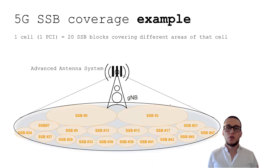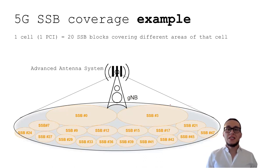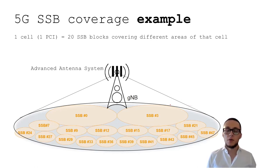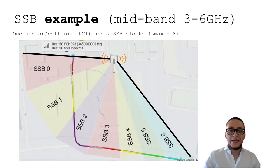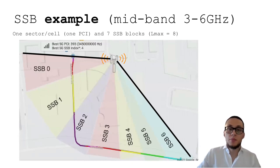From a conceptual point of view, let's understand what SSB beams and SSB coverage mean. Here you can see a gNodeB 5G base station with an advanced antenna system showing just one sector. That sector consists of 20 SSB blocks in this example, and you can see how different SSB blocks serve different areas. Here is another example from a real network for mid-band, where up to eight different SSB blocks are possible. We can see from drive tests how different SSB blocks cover and serve different physical areas — in that example, seven SSB blocks are configured for that cell and antenna sector.